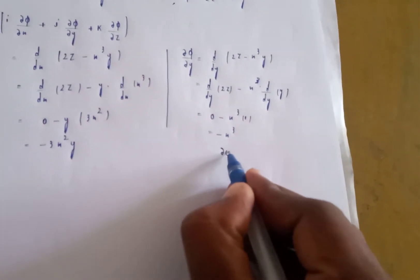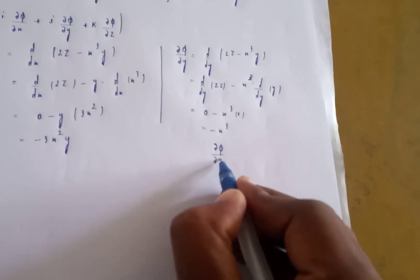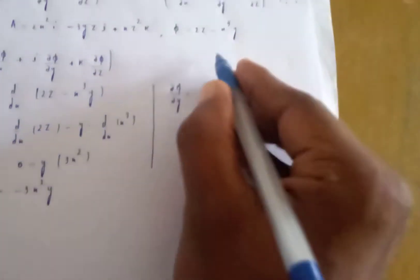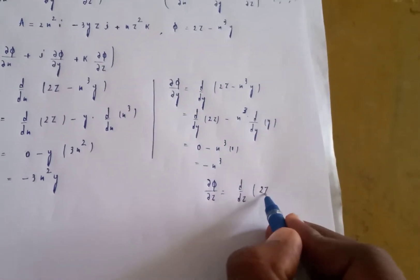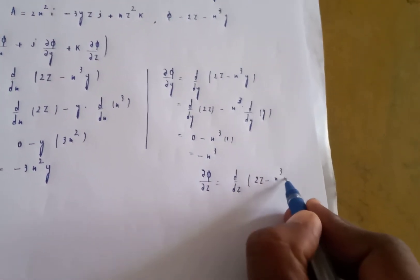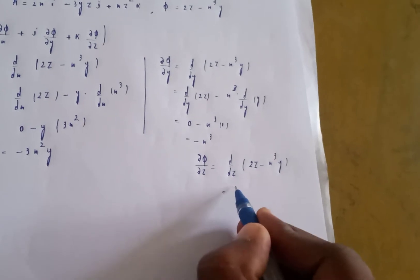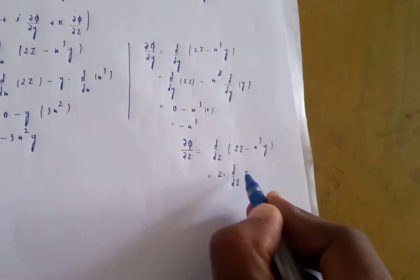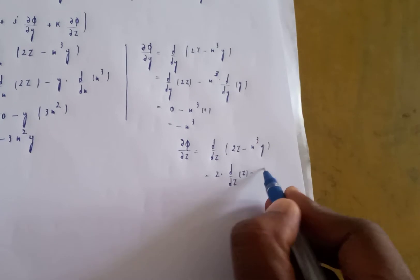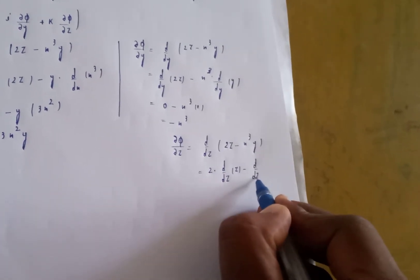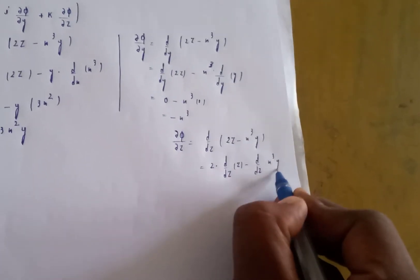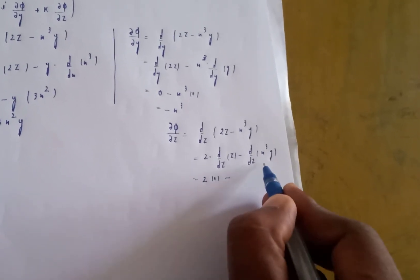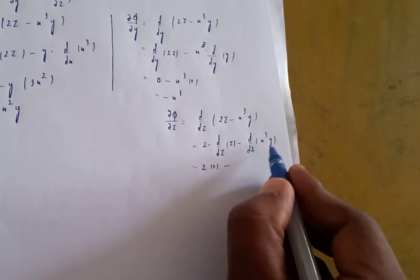Now d/dz of phi: d/dz of (2z minus x³y). 2 is constant, d/dz of z is 1, so 2 times 1 equals 2. d/dz of x³y is 0 since x and y are constant with respect to z. Therefore ∂φ/∂z equals 2.